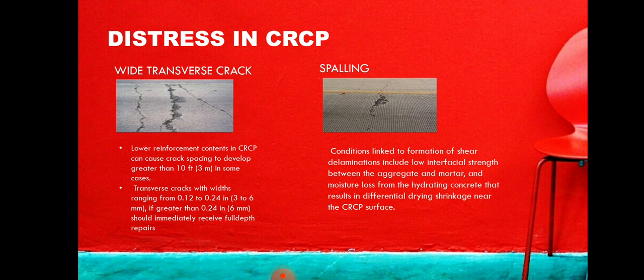There are some distress types in CRCP. The first is wide transverse crack. Lower reinforcement content in CRCP can cause crack spacing to develop greater than 10 feet (3 meters) in some cases. This large crack spacing can lead to widening of transverse cracks and an increase in tensile stresses in the reinforcement. Medium crack width ranges from 0.1 to 0.24 inches (3 to 6 mm); cracks greater than 0.24 inches (9 mm) should immediately receive a full-depth repair.